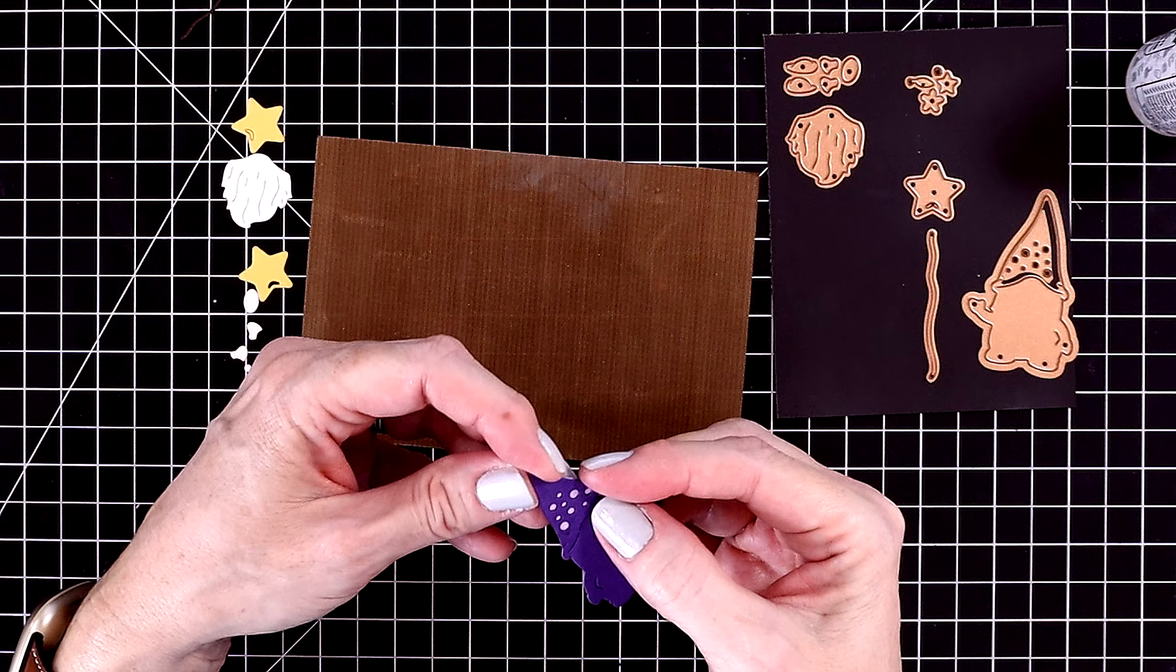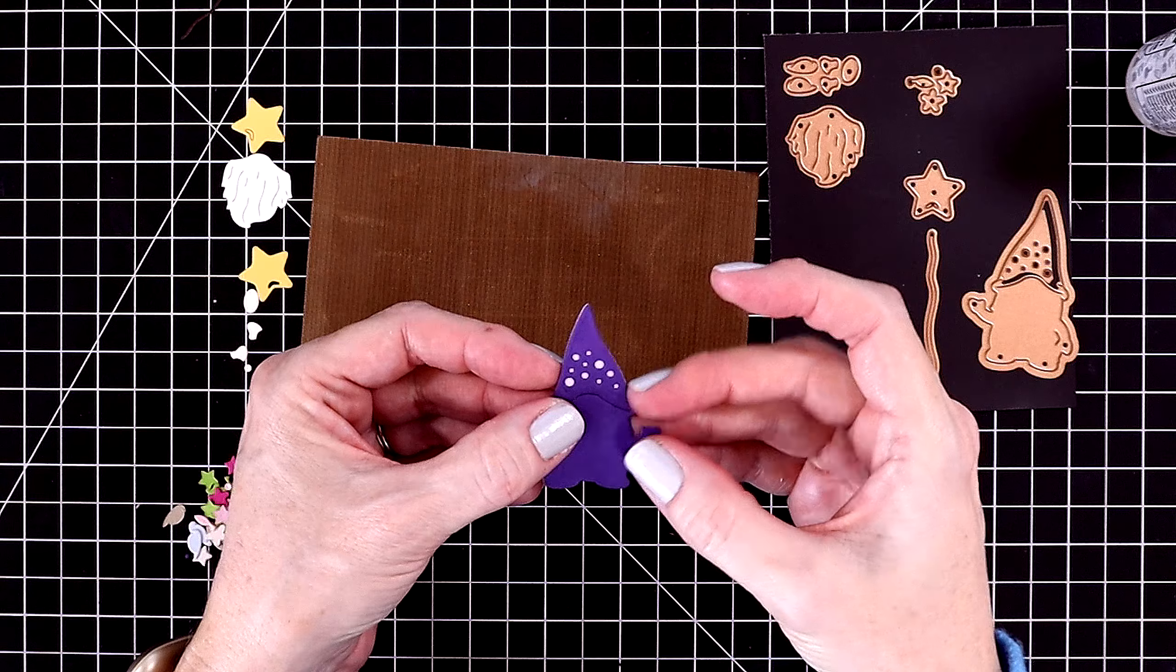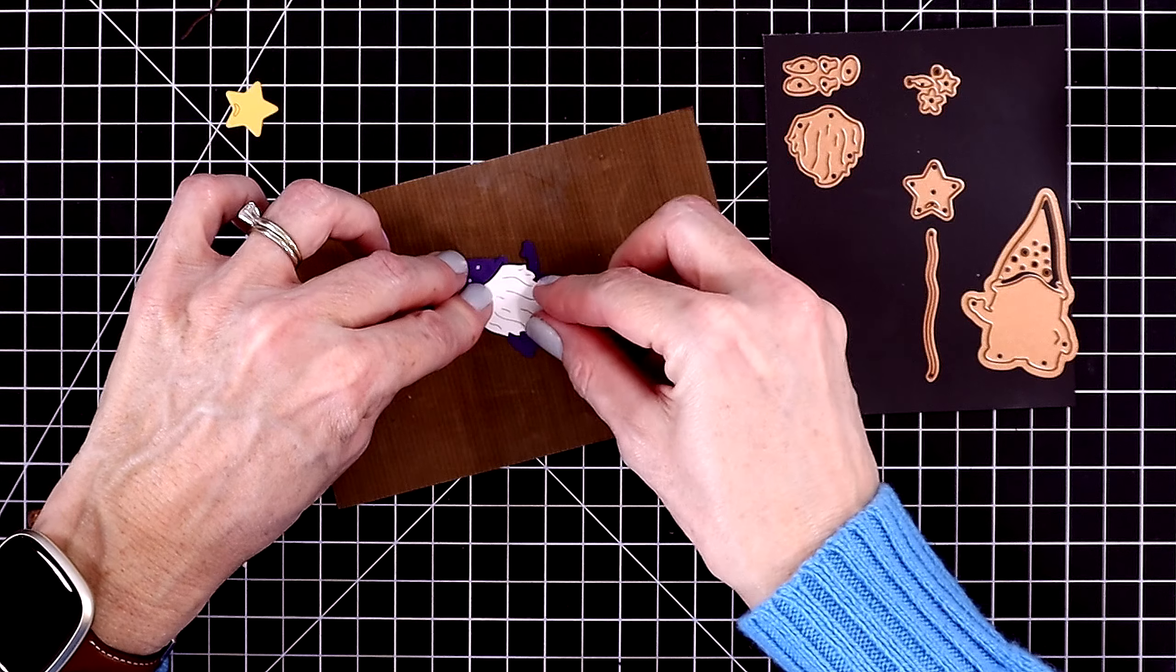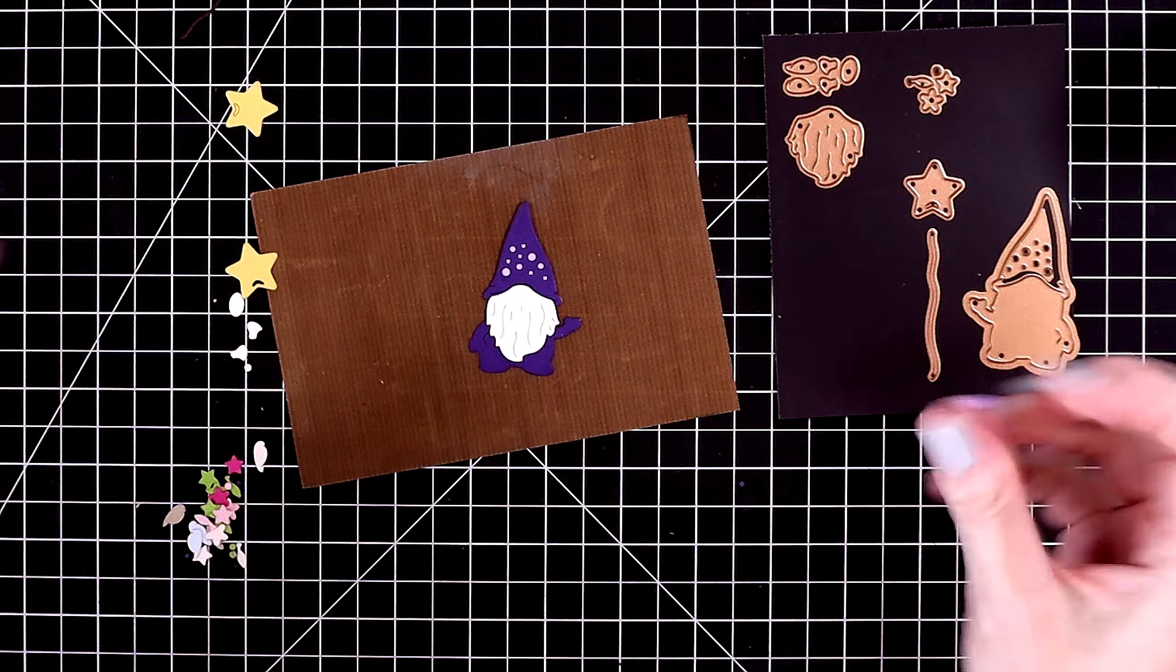I'm starting with a purple base for my gnome. I wanted the polka dots behind his hat to be light purple, so I'm just gluing that behind the hat. It just kind of snapped off, or you could snip it off easily.